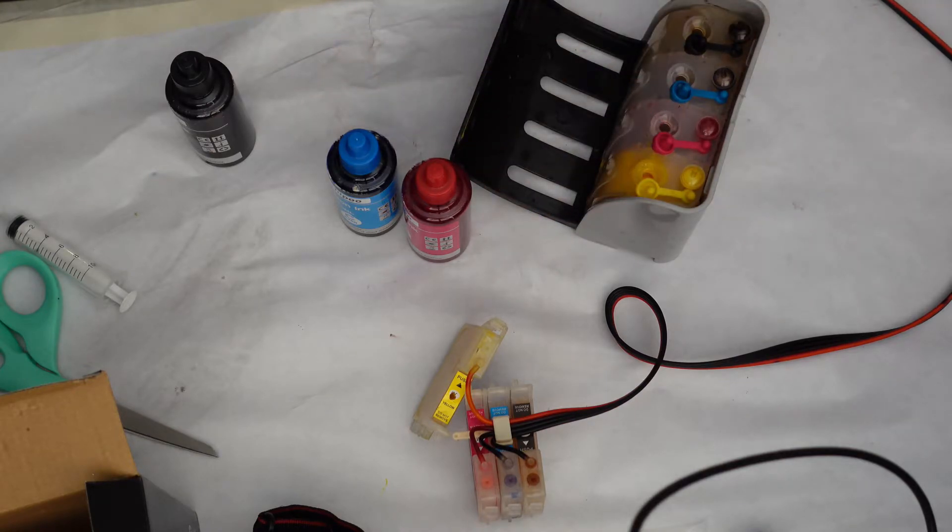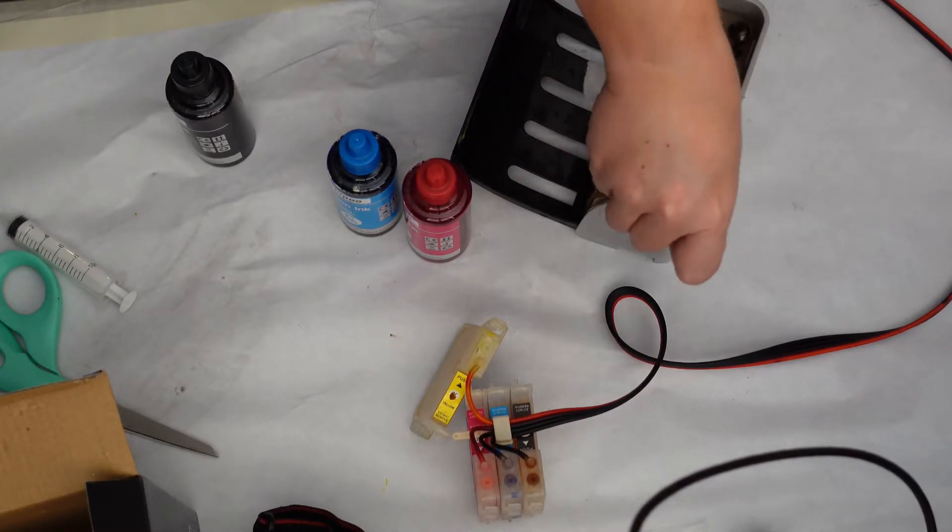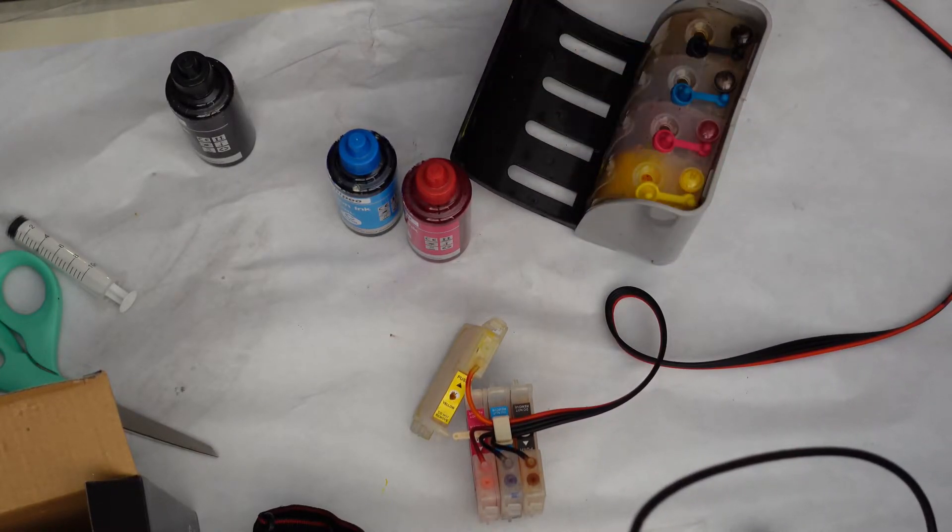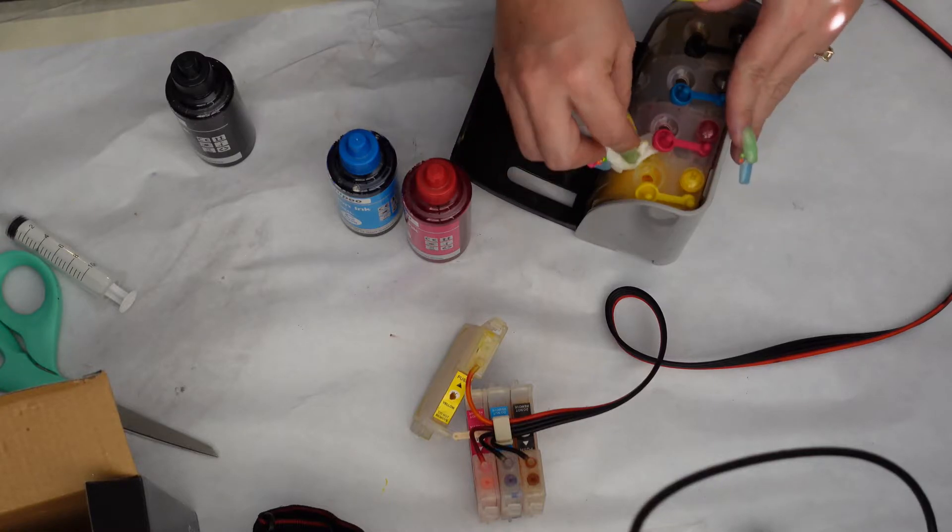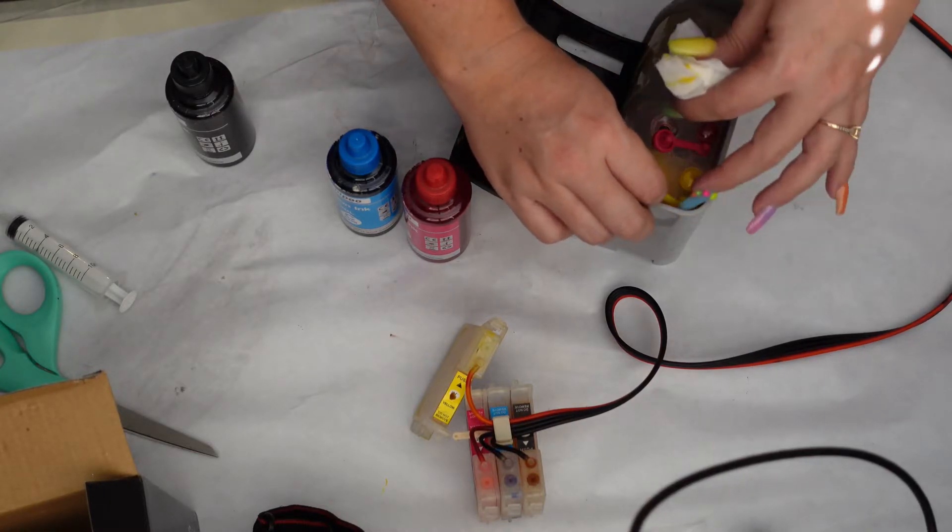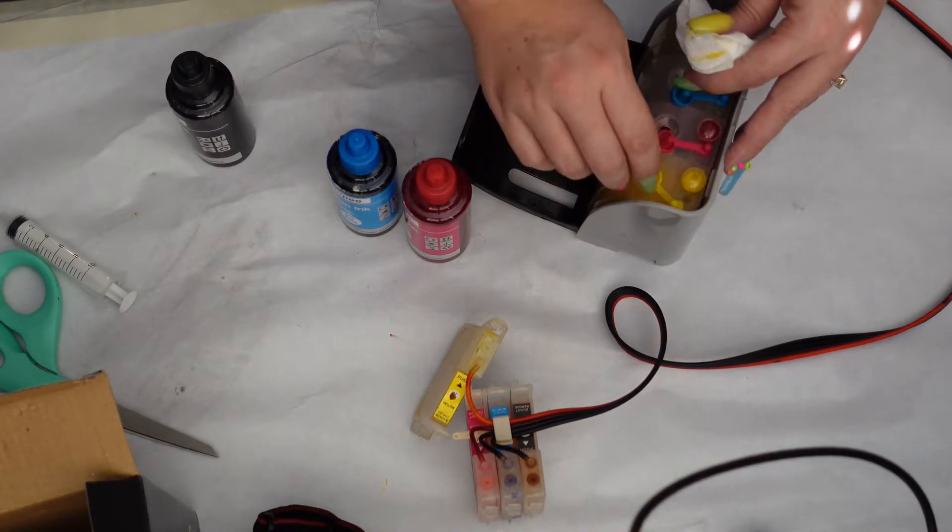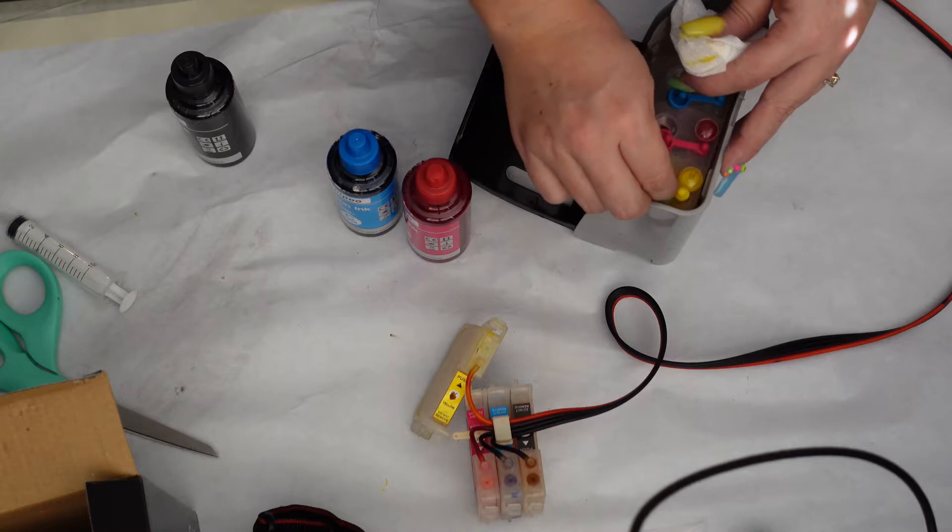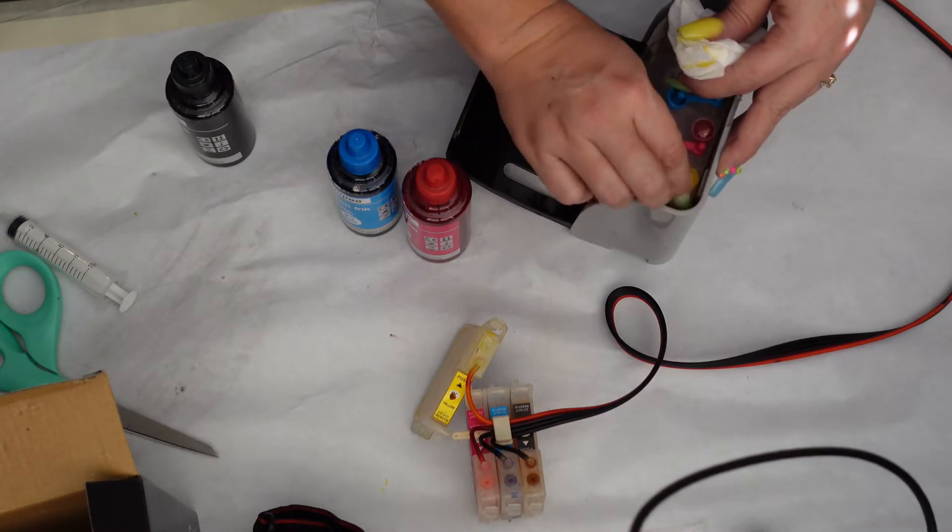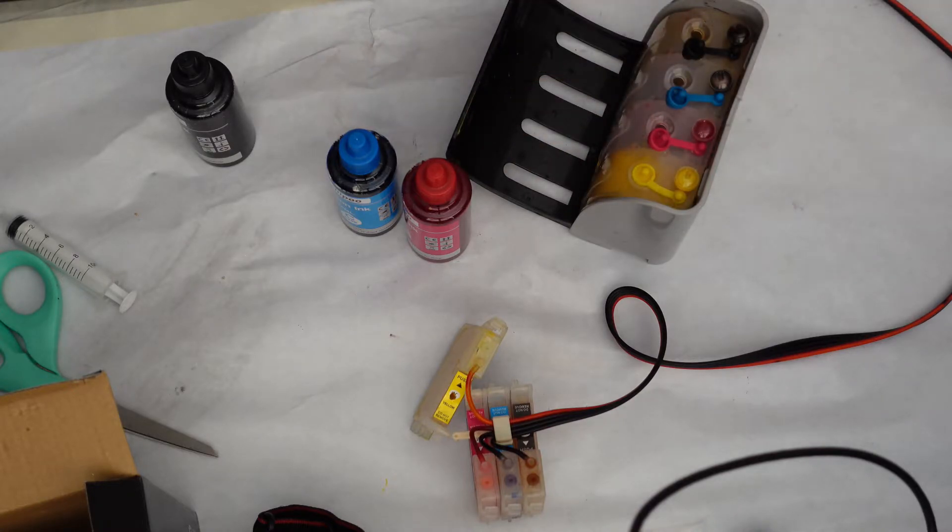Now we will take a paper towel, clean off this side, just to make sure we don't have any mess, and put our plunger in this side. And that is how you fill up your CISS. So let's do the rest of them and I will show you how to install it.